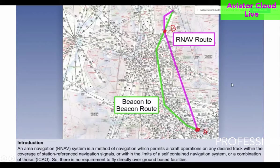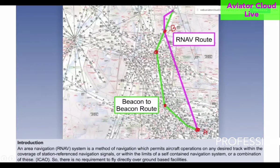Why can't you just tune in directly to point B's VOR and fly directly? Because it is not in range when you are starting from point A. So you have to choose another VOR which is within range, and then the next VOR within range, and so on. That's how aircraft used to fly traditionally.